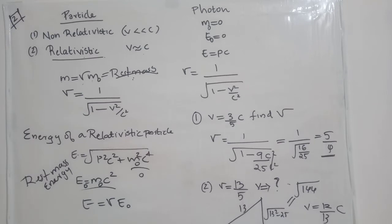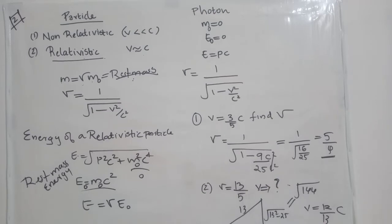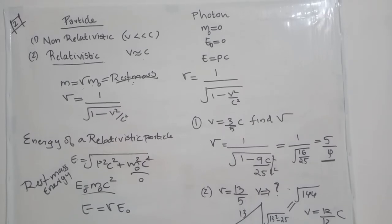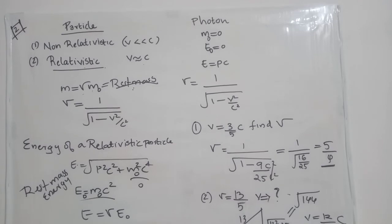Next, we discuss the relation between the relativistic constant gamma and velocity. There are questions where we need to find velocity from gamma, or gamma from velocity. In the first question, velocity is given as 3/5 C — find gamma. Substituting V = 3/5 C into gamma = 1/√(1 - V²/C²), we get 1/√(1 - 9/25). The C² cancels, and we get the answer gamma = 5/4.